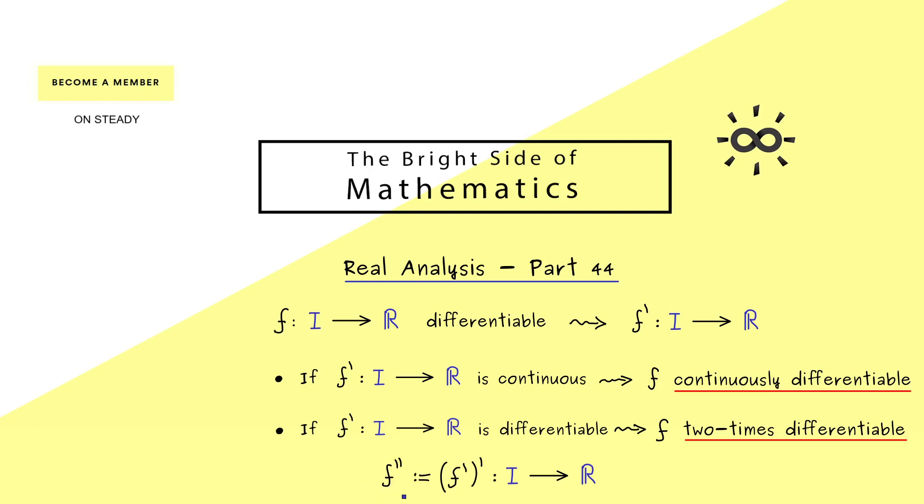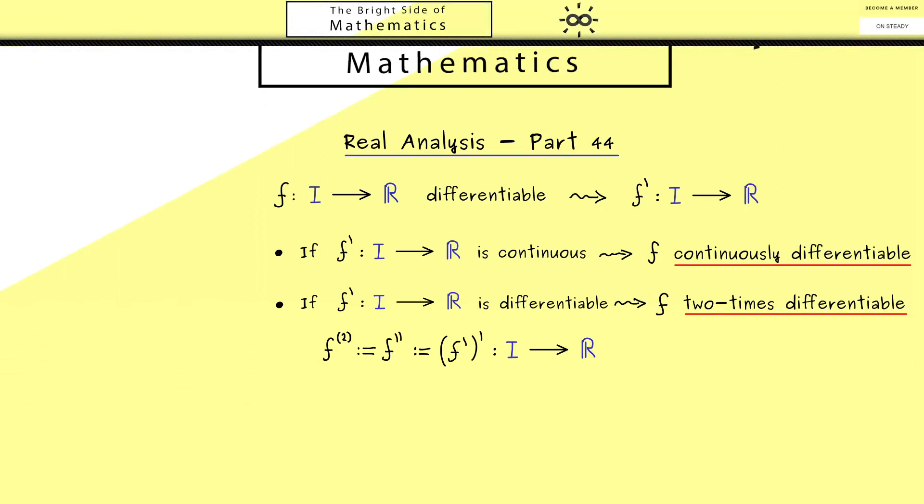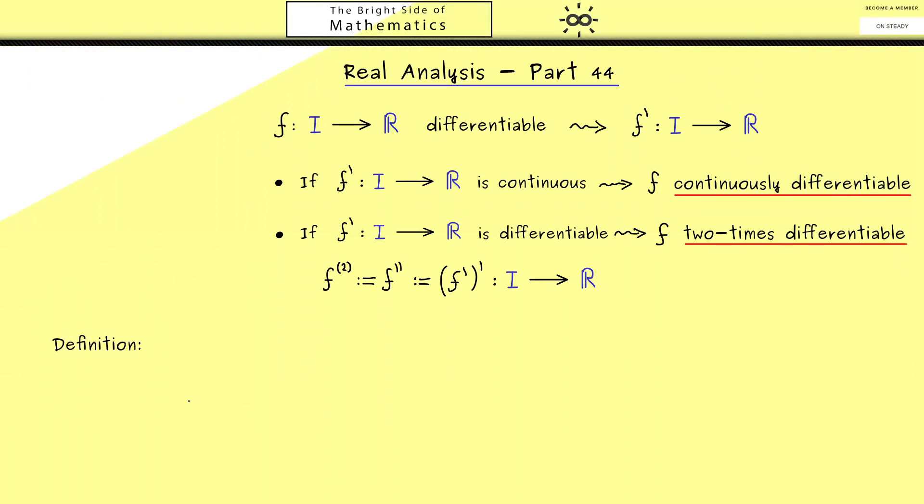Now you might already see, we can go even further and look at 3 times differentiable, 4 times differentiable and so on. Therefore for higher derivatives you wouldn't use the primes anymore, but we would use an upper index where we put the corresponding number in parentheses. Then I would say let's define the higher derivatives in an inductive way, and of course we should put it into a formal definition.